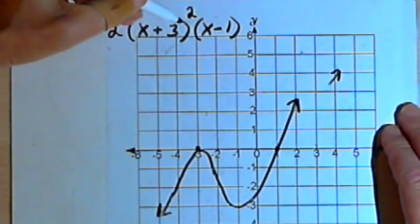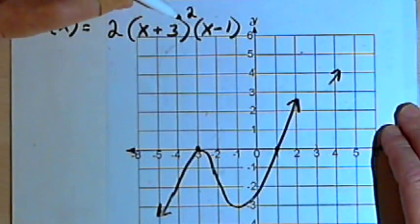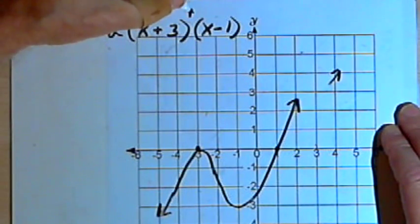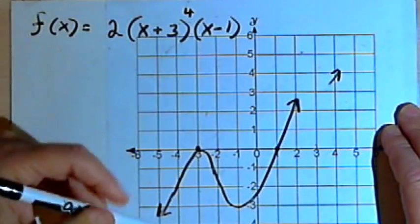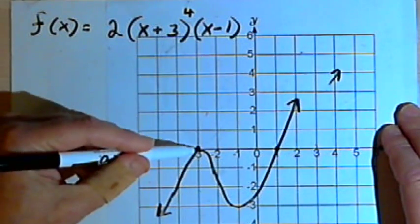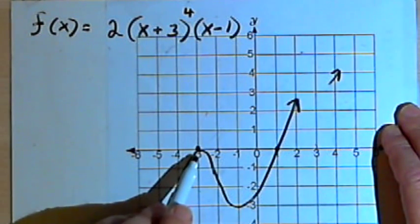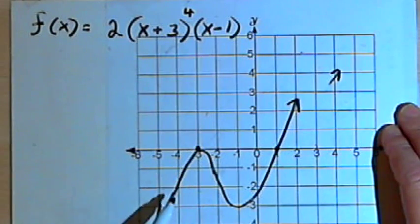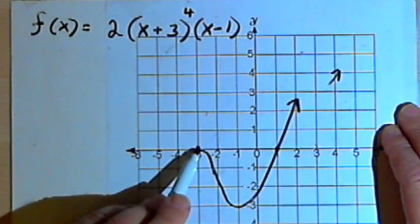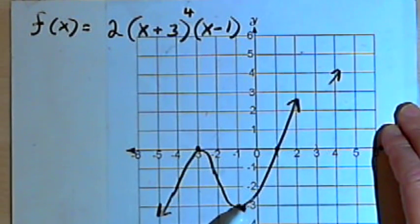So any even multiplicity, if there were a 4 here, or a 6, or an 8, the same thing would happen. The graph would go towards the zero at x equals negative 3 in this case, and then it would turn around when it hits the x-axis and continue onwards.